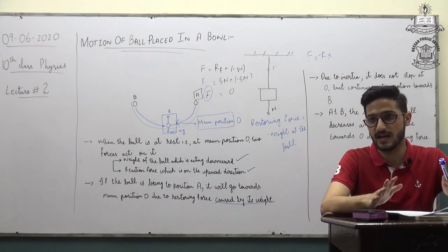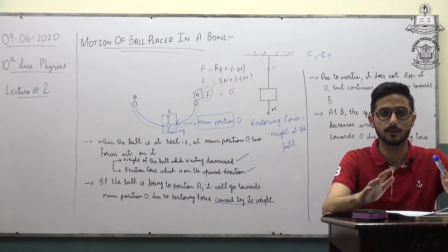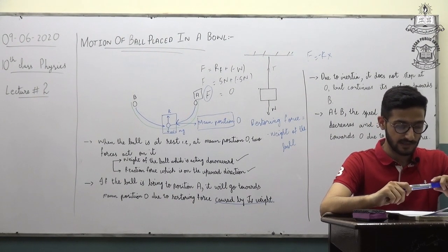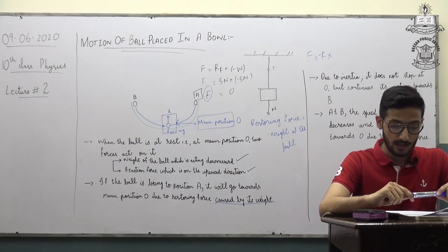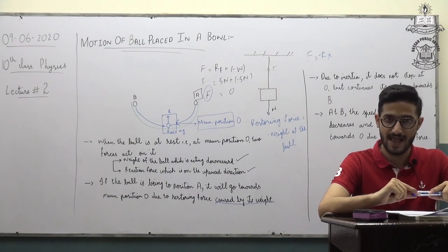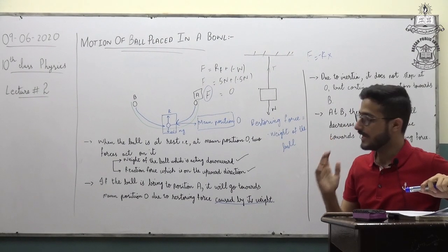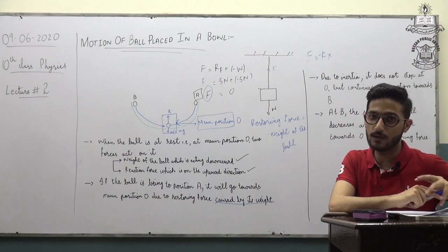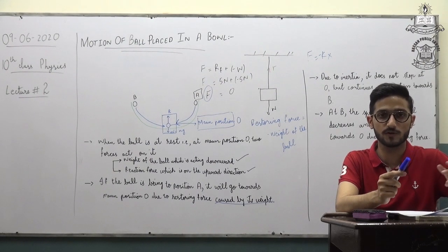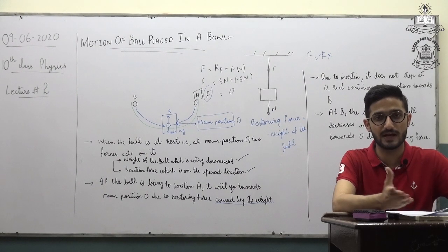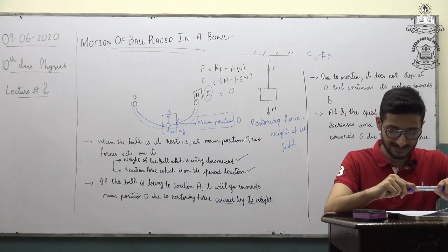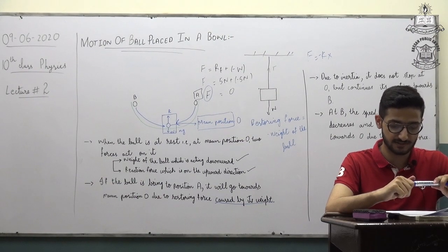In this position, the weight of the ball acts downward and is equal to the upward normal force of the surface of the bowl. Hence there is no motion because the net force is equal to zero. The next heading is 'At Extreme Position A.' If we bring the ball to position A and release it, the ball will start moving towards position O due to the restoring force caused by its weight. At position O the ball gets maximum speed.